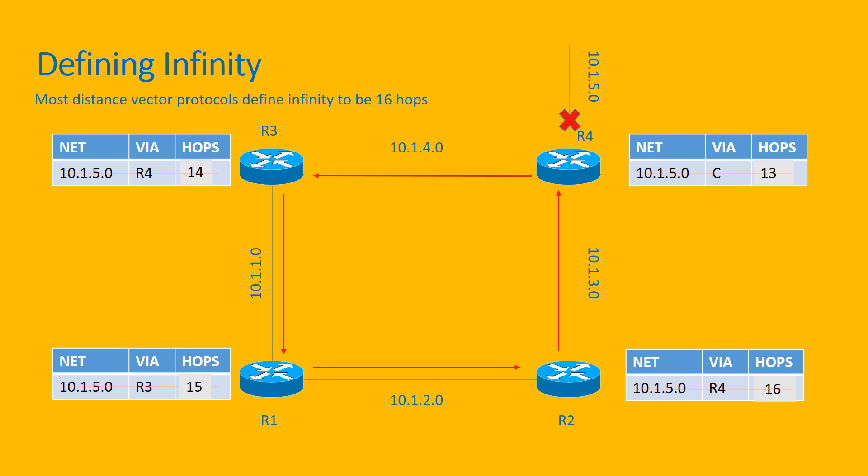However, convergence will be very slow. Given an update interval of 30 seconds, a network could take up to 7.5 minutes to reconverge and is susceptible to routing errors during this time. The two methods for speeding up reconvergence are trigger updates and holddown timers.